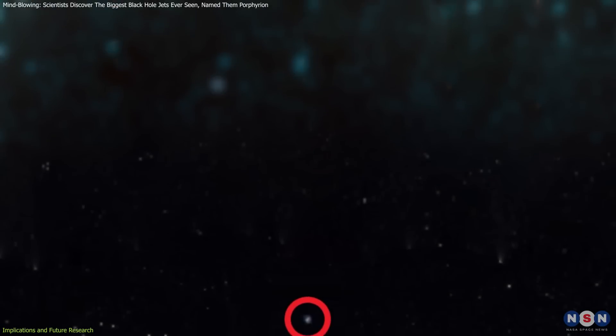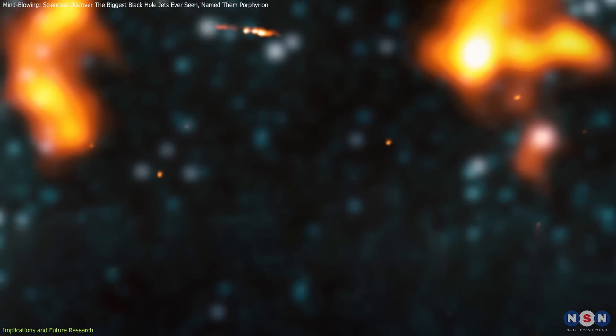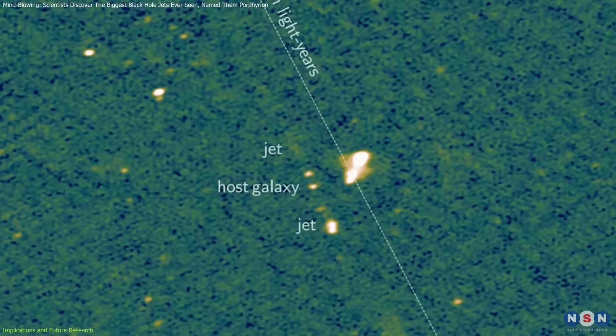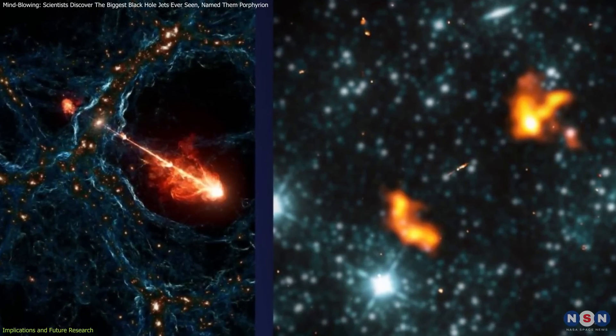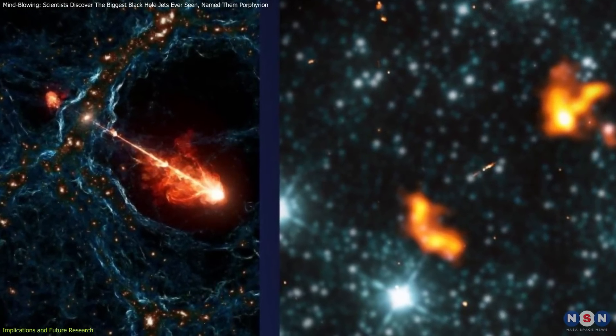Alcyoneus spans the equivalent of about 100 Milky Way galaxies, making it a giant in its own right, though still significantly smaller than Porphyrion. In fact, Porphyrion is about 40% larger than Alcyoneus.